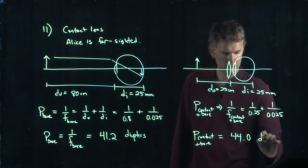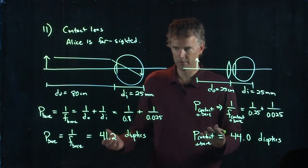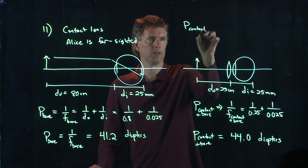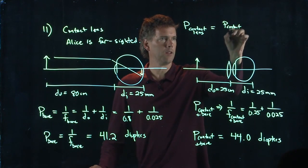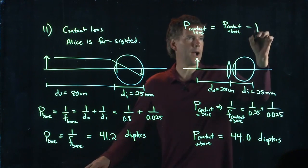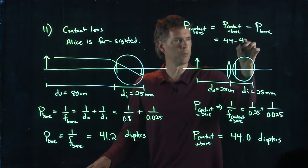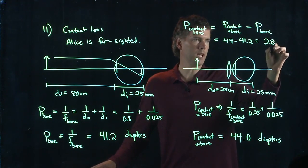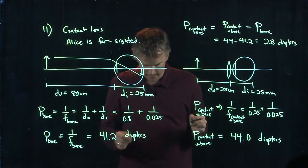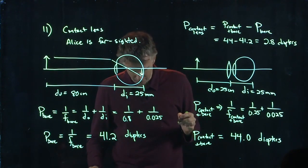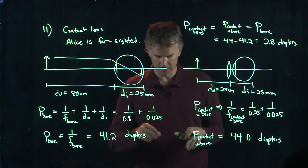So the bare eyeball was 41.2. The system together was 44. And since you can add powers, what is the power of the contact lens? It's just the difference. It's going to be the power of the contact with the bare eyeball minus the power of the bare eyeball. 44 minus 41.2, and that's going to equal 2.8 diopters. And that's a positive number. And if we look at the answers, one of them is really close to 2.8. It is answer B. It says 2.75, so there must have been a little bit of extra digits here somewhere that we missed.